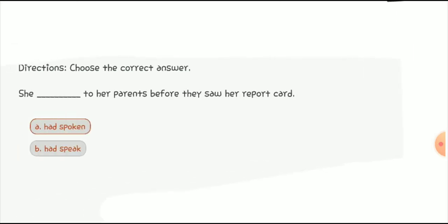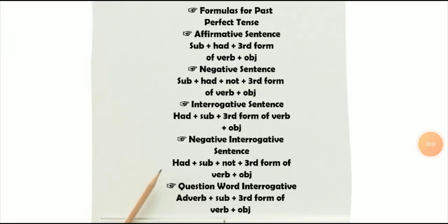Quiz number five: 'She ___ to her parents before they saw her report card.' The answer is 'she had spoken,' because 'speak' is the first form of the verb and we do not use the first form for past perfect tense — we use the third form. So 'had spoken' is the correct option. Some examples of past perfect tense include: 'had met,' 'had left,' 'had written.'